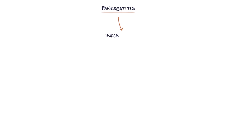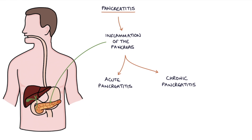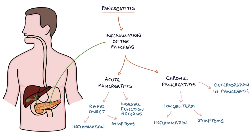Pancreatitis refers to inflammation of the pancreas, and it can be categorized as acute pancreatitis or chronic pancreatitis. This section mainly relates to acute pancreatitis. Acute pancreatitis presents with a rapid onset of inflammation and symptoms, and after an episode of acute pancreatitis, normal function usually returns to the pancreas. Chronic pancreatitis involves longer term inflammation and symptoms with a progressive and permanent deterioration in pancreatic function.